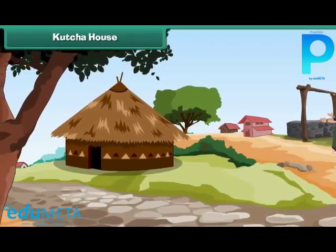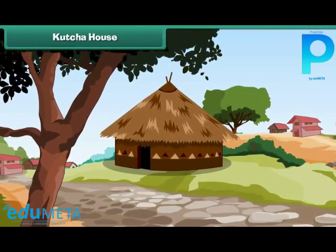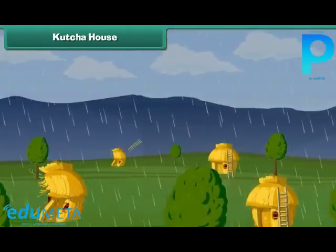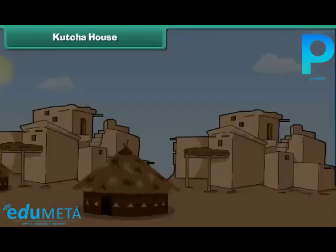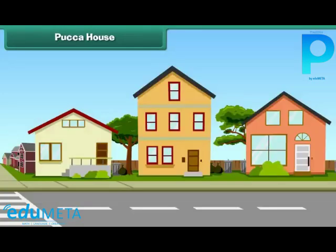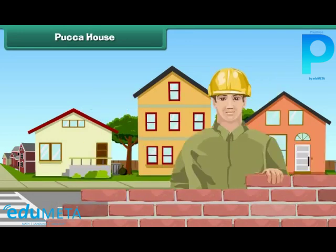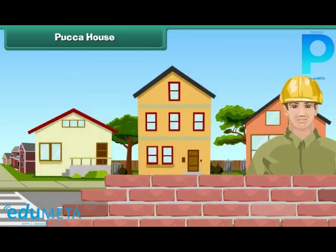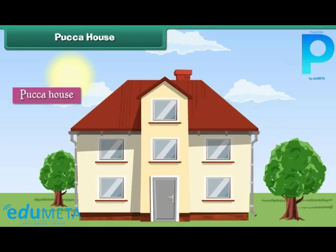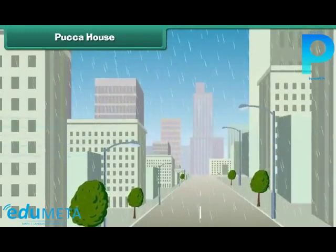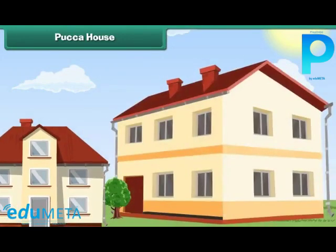In villages, houses are built with mud and straw. Such houses are called Kaccha houses. They are weak and are easily destroyed by earthquakes, storms, and floods. Kaccha houses can be single or multi-storied.